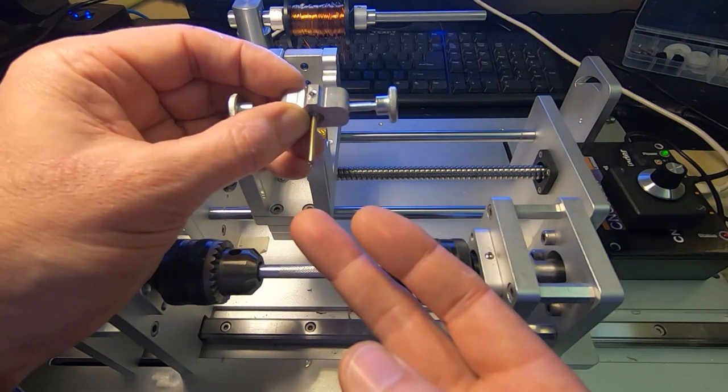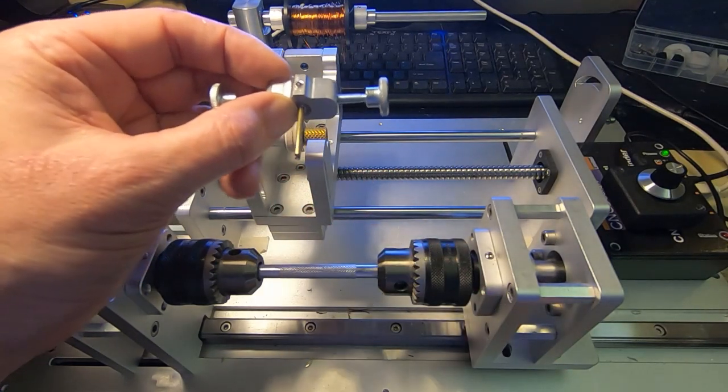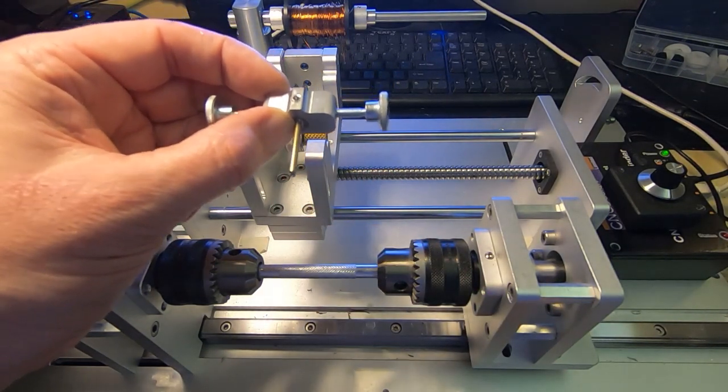So by adjusting the rotation of this, you can separate the two wires to exactly the diameter of the wire so they lay down properly. And other than that, it behaves like a standard nozzle.